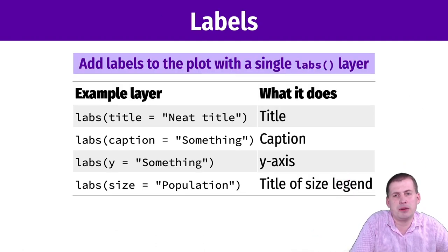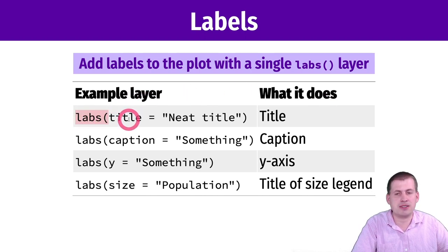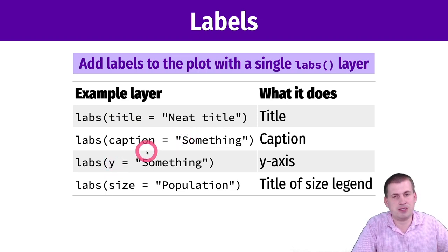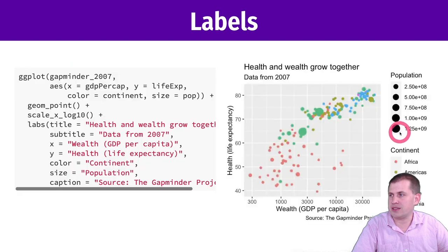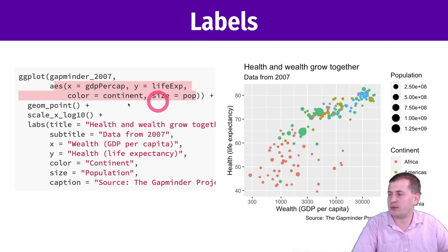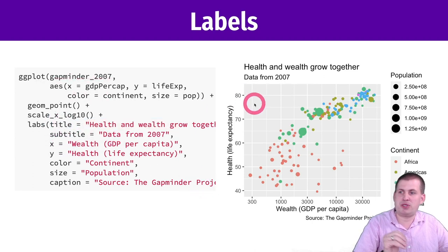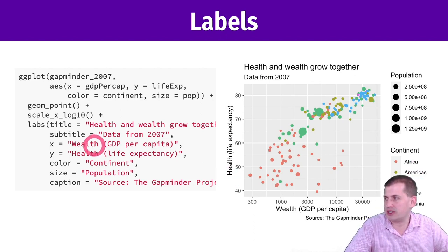You can also add a labels layer, which is simpler than the others — just a single labs() function in R. Inside labs, you can specify the title, caption, y-axis label, and more. This example shows the same gapminder plot with x as GDP per capita, y as life expectancy, colored by continent, sized by population, with the x-axis logged. One labs function sets the title, subtitle, axis titles, legend titles, and caption — all included with that one layer.